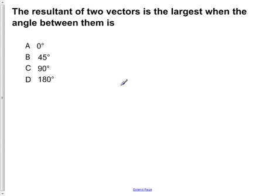The resultant of two vectors is the largest when the angle between them is: A, 0 degrees; B, 45 degrees; C, 90 degrees; or D, 180 degrees.